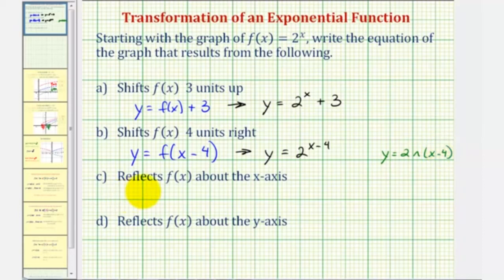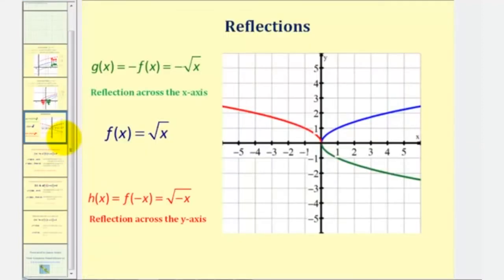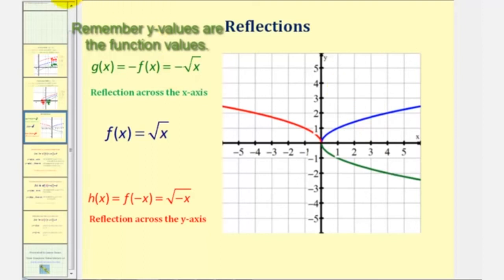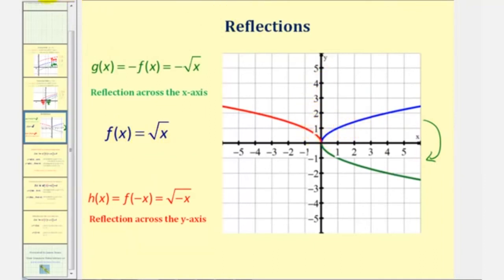Now we want to reflect f of x across the x-axis and then the y-axis. Starting with the basic square root function graphed in blue: to reflect f of x across the x-axis, we let g of x equal the opposite of f of x — in this case, negative square root of x — changing the sign of the y-coordinates. To reflect f of x across the y-axis, we change the sign of the x-coordinates, so h of x equals f of negative x, or the square root of negative x. Reflecting across the x-axis changes the sign of the y values; reflecting across the y-axis substitutes negative x for x.